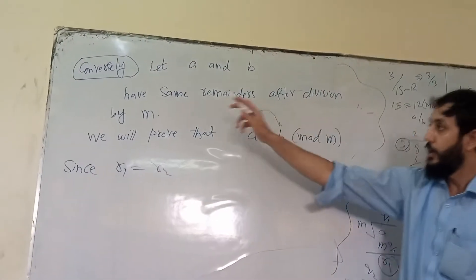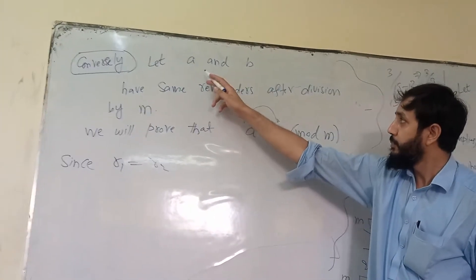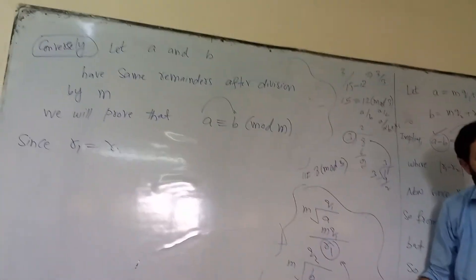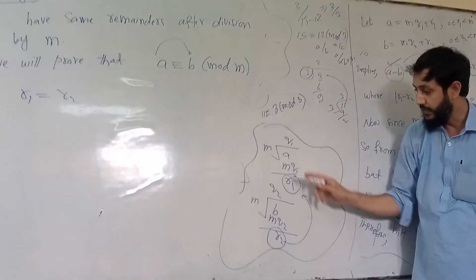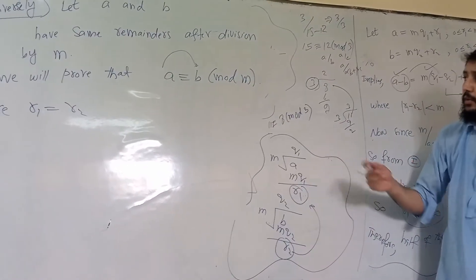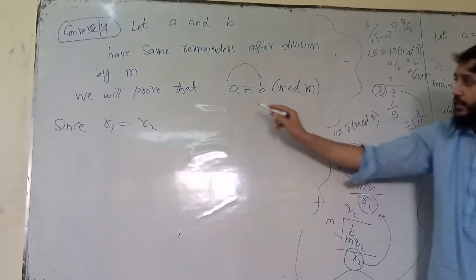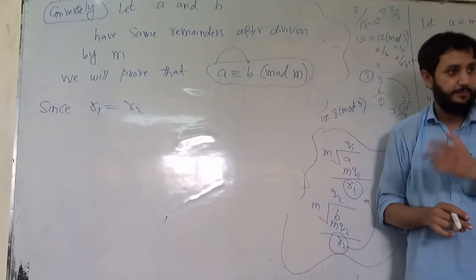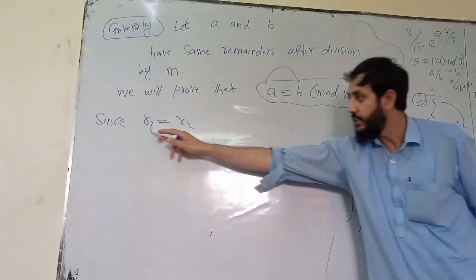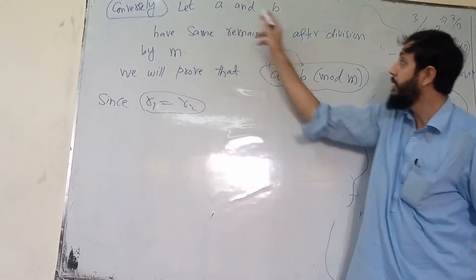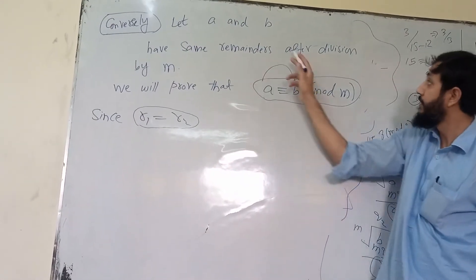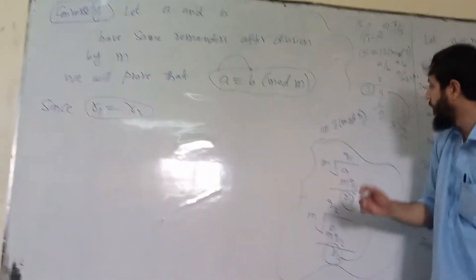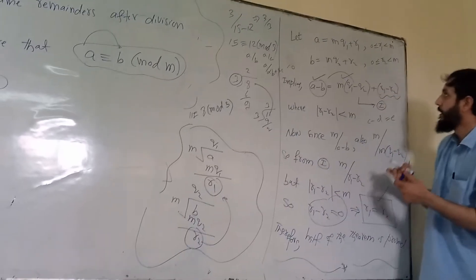Now we are going to prove the other half of the theorem. Conversely, let us suppose that A and B have the same remainders after division by M — that is, R1 equals R2. Our target is to prove that A is congruent to B modulo M, that is, M divides their difference.